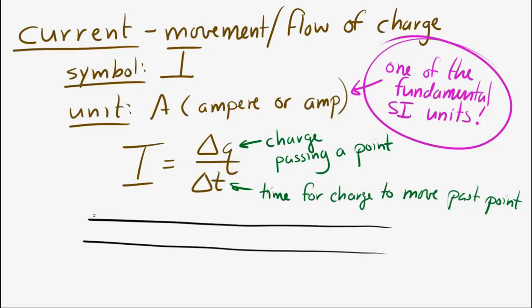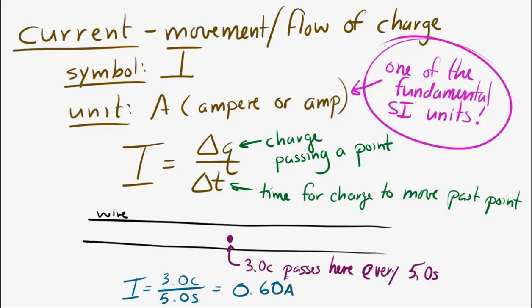If three coulombs of charge pass through this little conducting wire every five seconds, then the current is equal to the amount of charge that passed by, three coulombs, divided by five seconds. So, the current is equal to 0.600 amps. And if you look at the units, turns out an amp is equal to a coulomb per second.